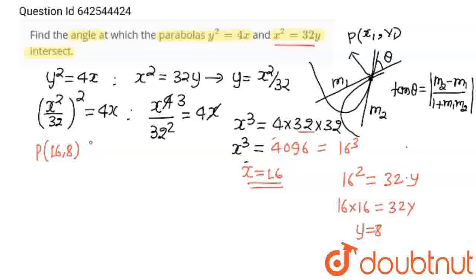Now I'm going to differentiate both the curves and I will find m₁ and m₂. For y²=4x, if I'm differentiating both sides, we'll get 2y(dy/dx)=4. And from here we'll get dy/dx=4/(2y), which is equal to 2/y.